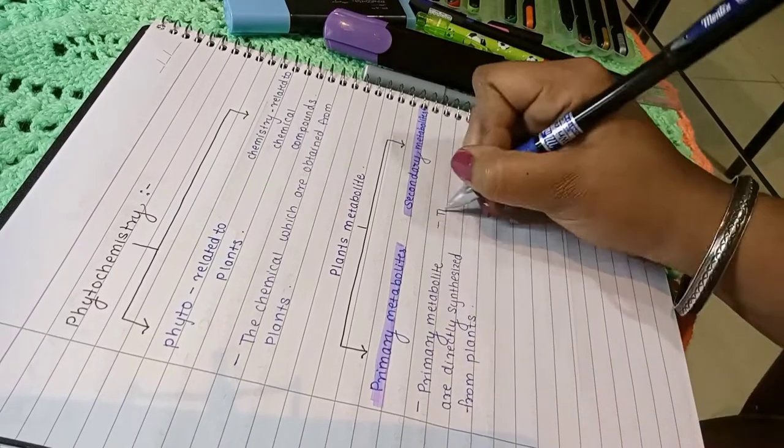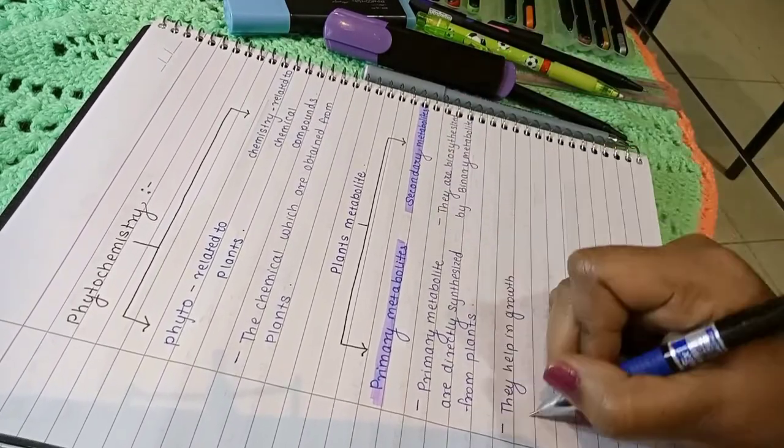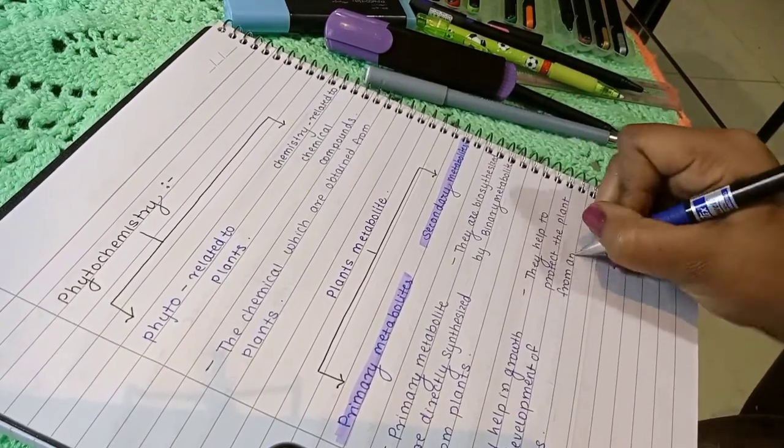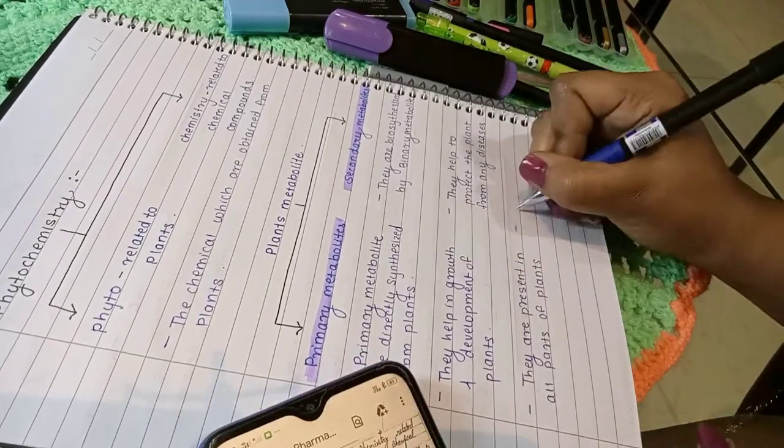But if you feel a particular topic is more important then you can use a sticky note to highlight them. In this I haven't used post-it notes because I don't feel anything is important in this topic, but post-it notes are really useful because you can remove it and paste it again when you want.